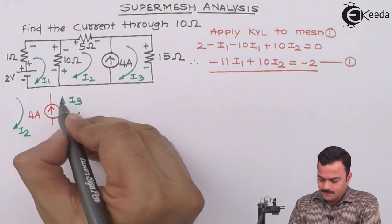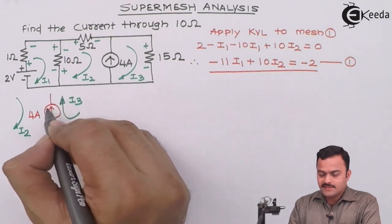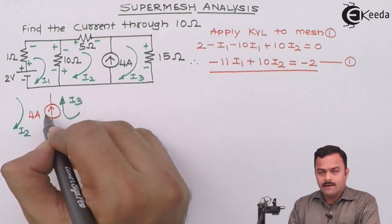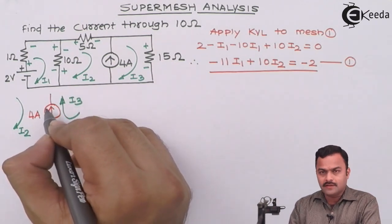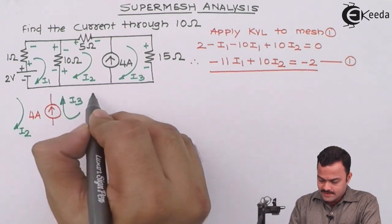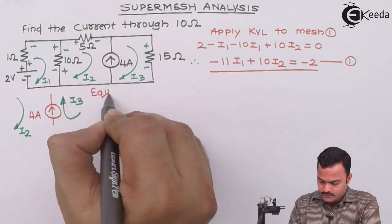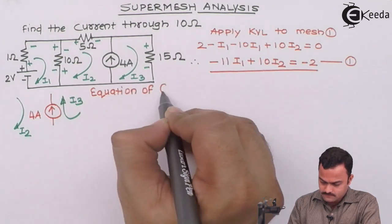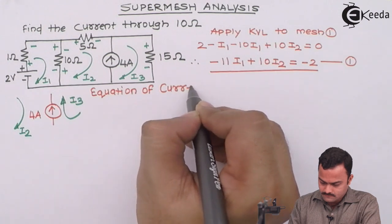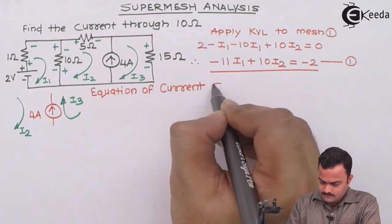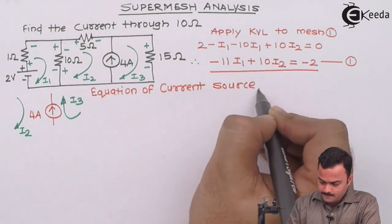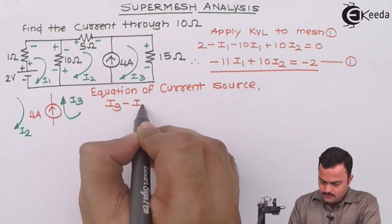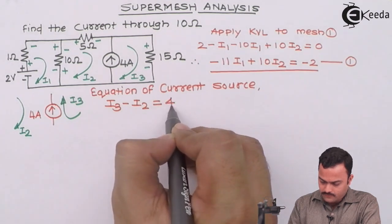And second is I2 in this direction. So if you see carefully, given current direction is upward, which is matching with the I3 and I2 is just opposite to that of 4 ampere current source. So I can say equation of current source is I3 minus I2 equal to 4.